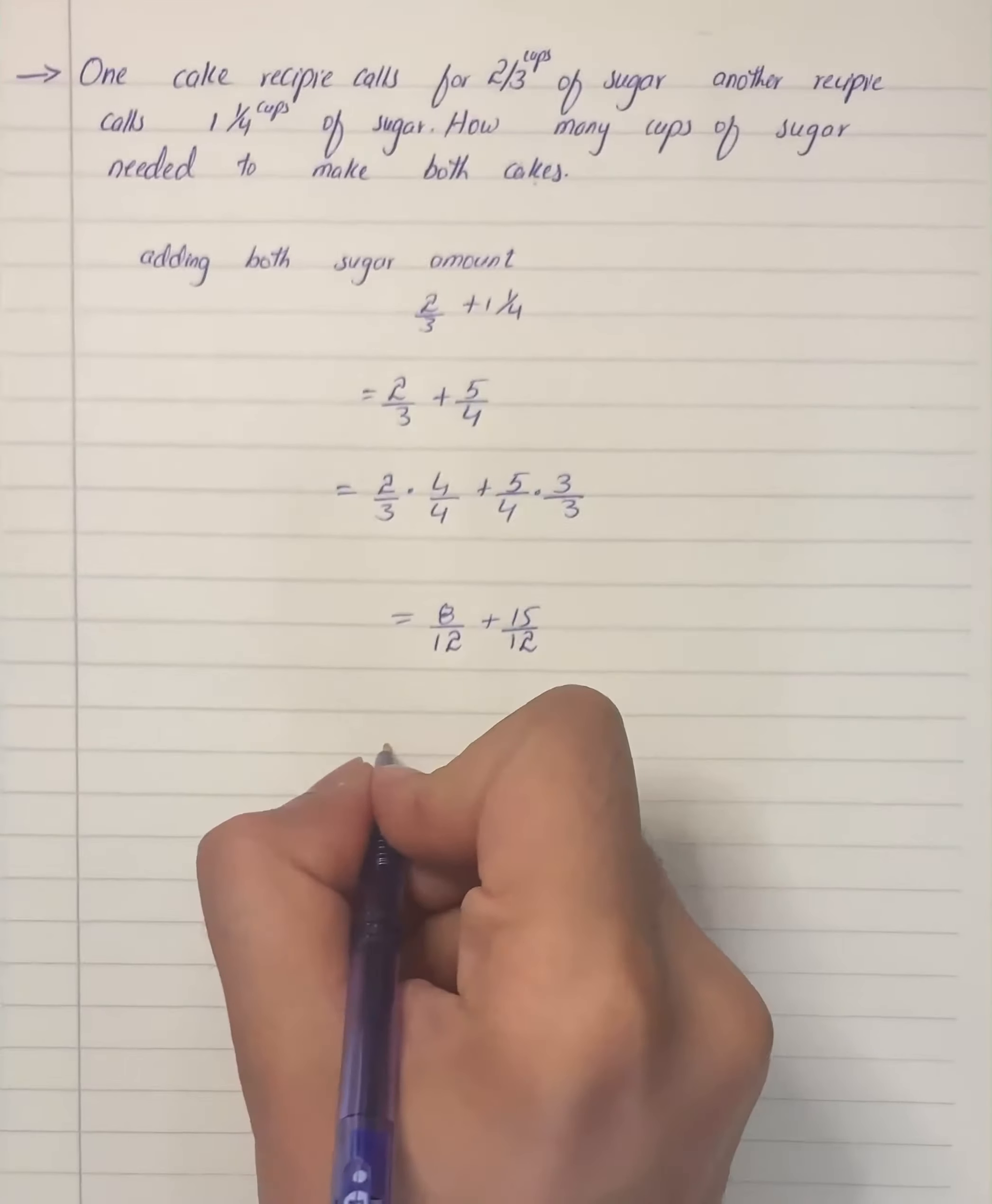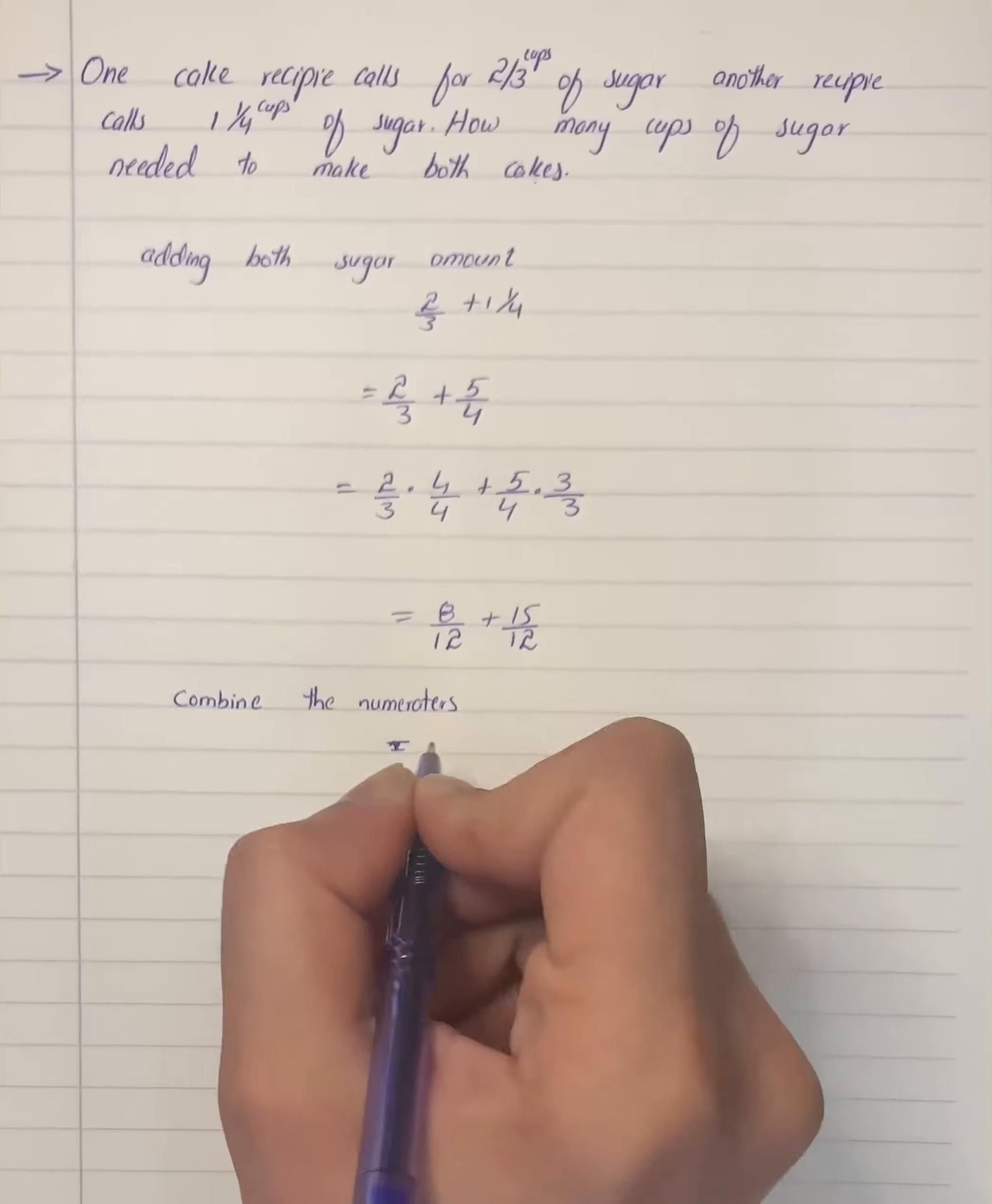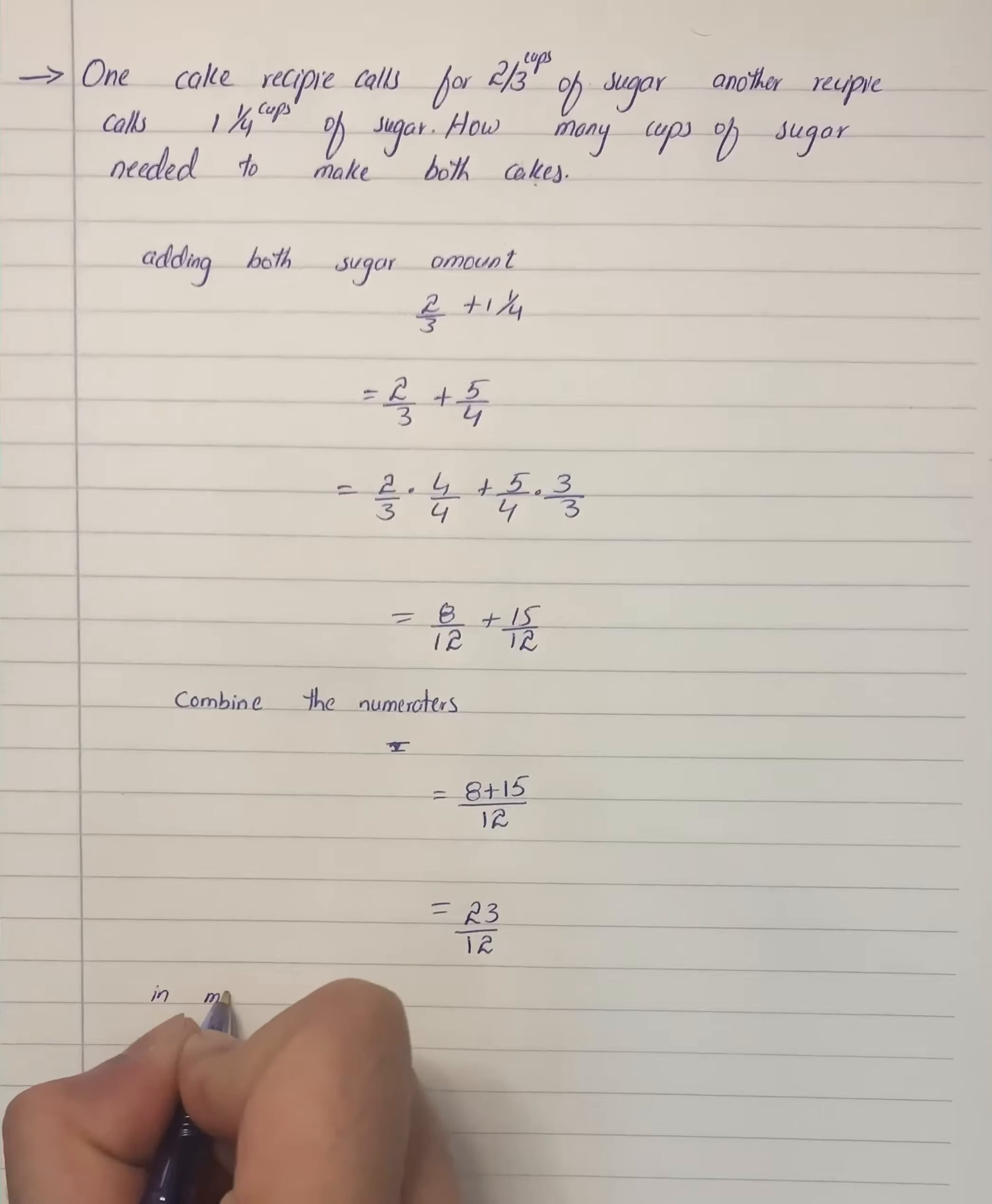We already have the same denominator, so we can combine the numerators. This gives us twenty-three by twelve.